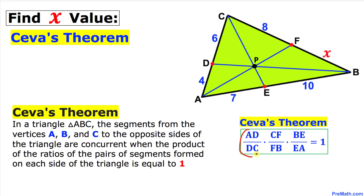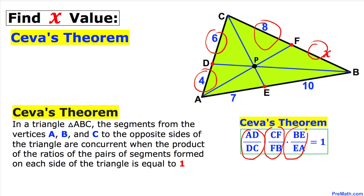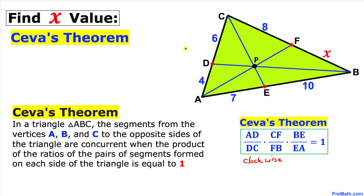These are the ratios we are multiplying. The formula is: AD over DC, times CF over FB, times BE over EA, and that product must equal 1. AD and DC are the segments on one side, CF and FB on another, and BE and EA on the third. We got these ratios by going clockwise.